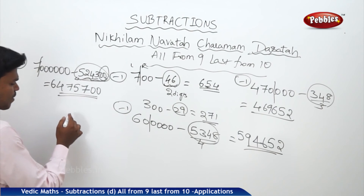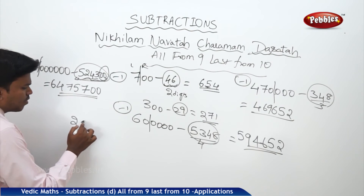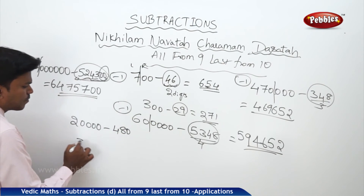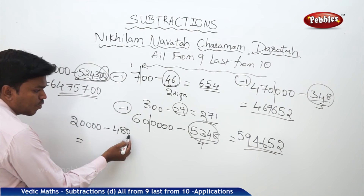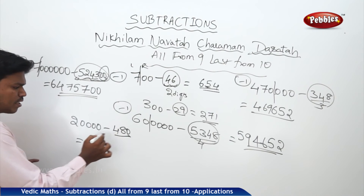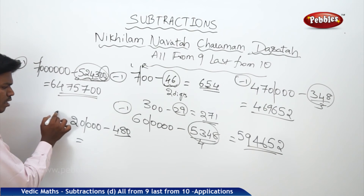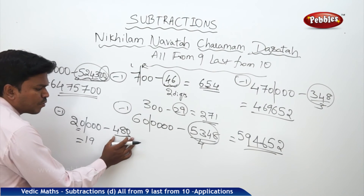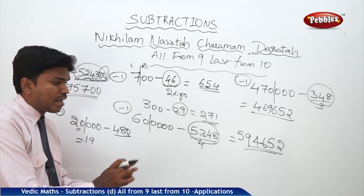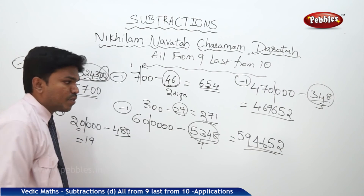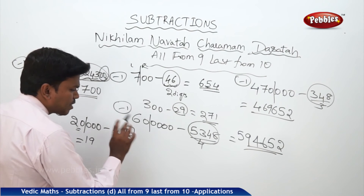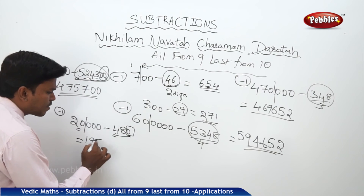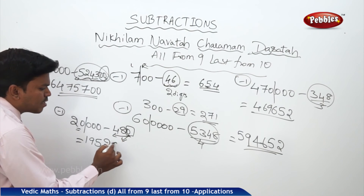Suppose 20,000 minus 480. You are going to get a zero — don't worry. How many digits? 3 digits. Make a partition: one, two, three. The left-side part is 20; 20 becomes 19. To get the remaining part, apply All from 9, Last from 10 to 480. As we discussed, ignore the zero for now — for 48 only, write All from 9, Last from 10: for 4 it is 5, for 8 it is 2. Now drop the zero as it is. So your answer is 19,520.